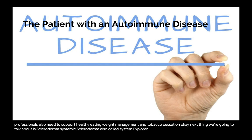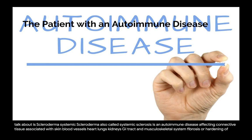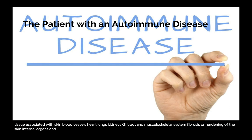Systemic scleroderma, also called systemic sclerosis, is an autoimmune disease affecting connective tissue. It is associated with the skin, blood vessels, heart, lungs, kidneys, GI tract, and musculoskeletal system. Fibrosis or hardening of the skin and internal organs (vasculopathy) may occur. There are three types of systemic scleroderma.